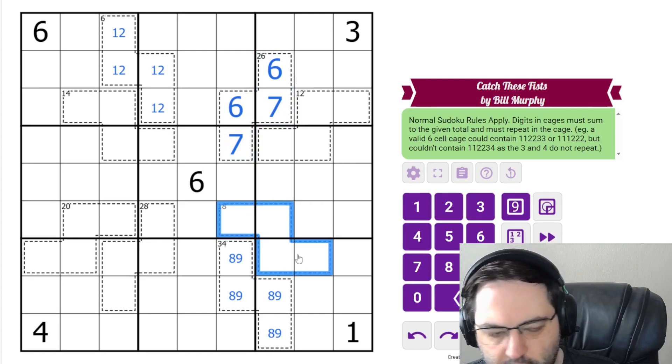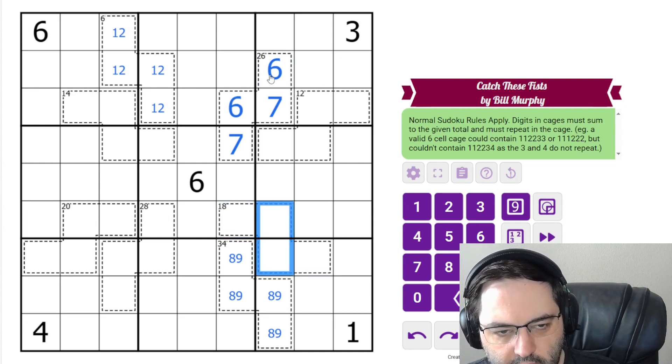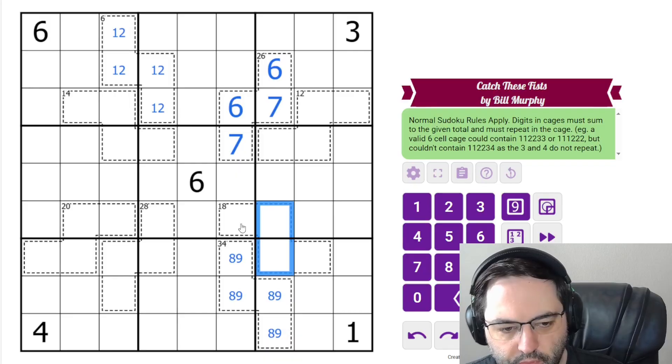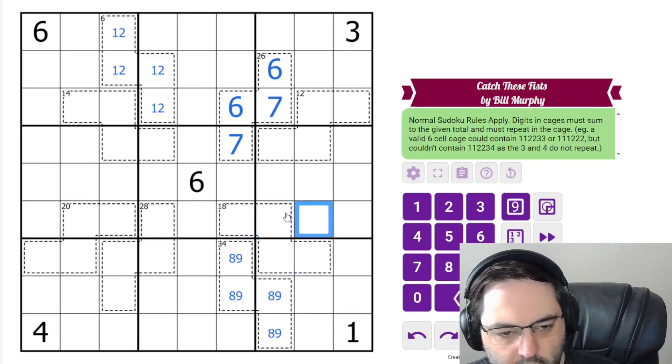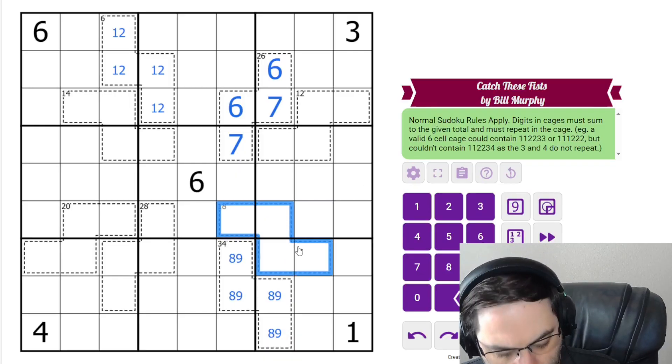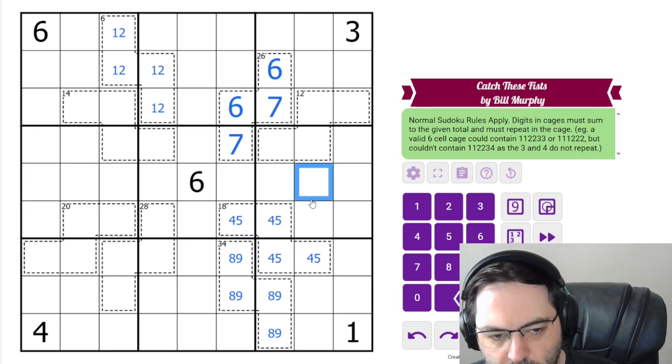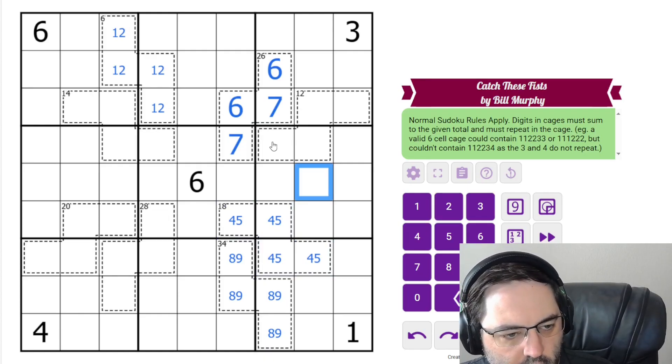Let's look at the 18 next. This 18 cage can't contain six, seven, eight, nine. So they're ruled out of all three of these actually. So the highest here we can have is five, four. Five and four sum to nine, so doubling that is 18.